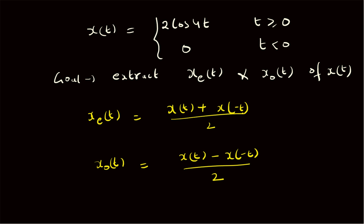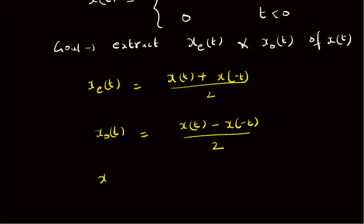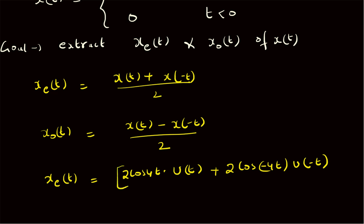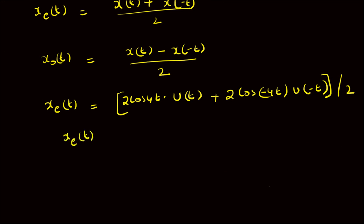For the given signal x of t, which is 2 times cos of 4t, the even component x_e of t is given by 2 times cos of 4t multiplied by u of t, plus 2 times cos of minus 4t multiplied by u of minus t, all divided by 2. Simplifying, since u of t is non-zero only for t greater than or equal to 0, we get cos of 4t for t greater than or equal to 0, and cos of 4t for t less than 0.